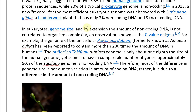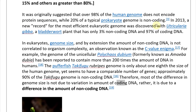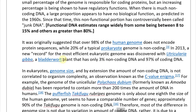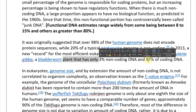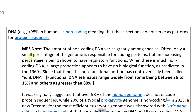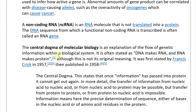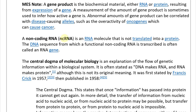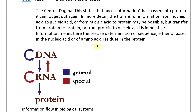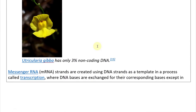Most organisms have a lot of non-coding DNA, and that is the primary reason for genome size differences. The Utricularia plant is a special case at only 3% non-coding. Non-coding DNA is still transcribed to RNA — a non-coding RNA is an RNA molecule that is not translated into a protein. So it goes from DNA to RNA, but not to protein. The general case should actually be DNA to RNA, and then only the special case continues to protein.